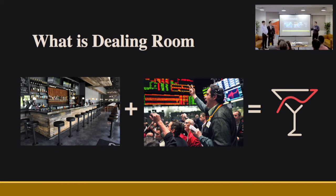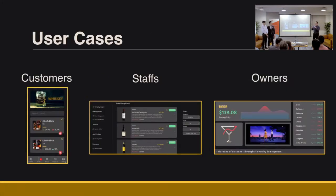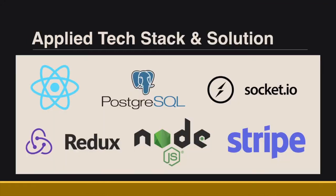Our solution consists of three killer attractions within three interfaces: connectivity, instant feedback, and improved earnings. From customers using QR codes to order their food and drinks without a single installation, to sending customers' orders immediately to the staff in the bar kitchen without any middleman. With the help of React Framework and Socket.io, everything is streamlined and spontaneous.